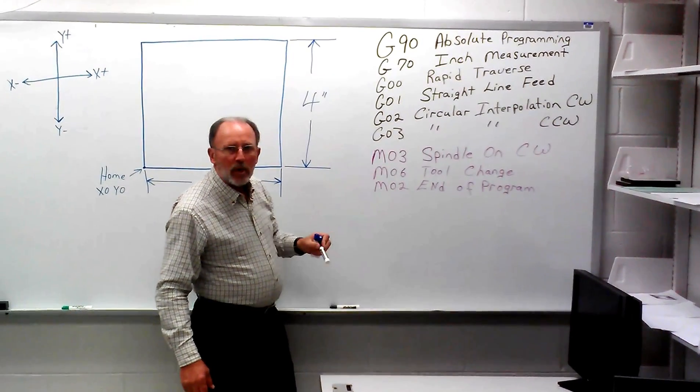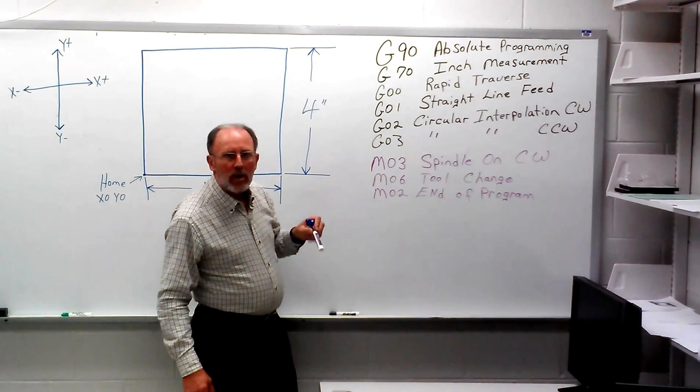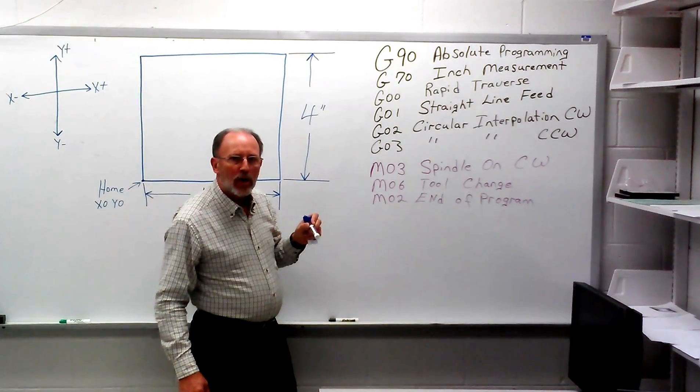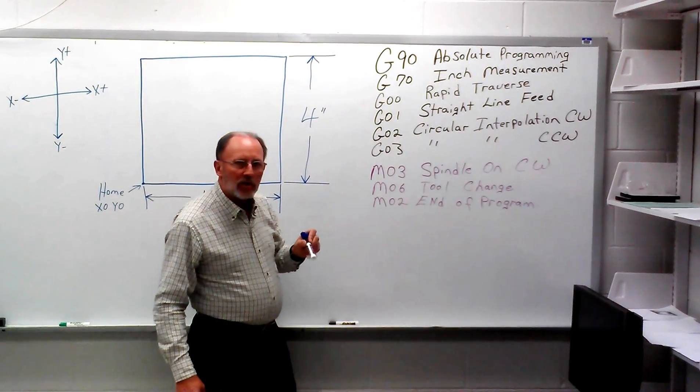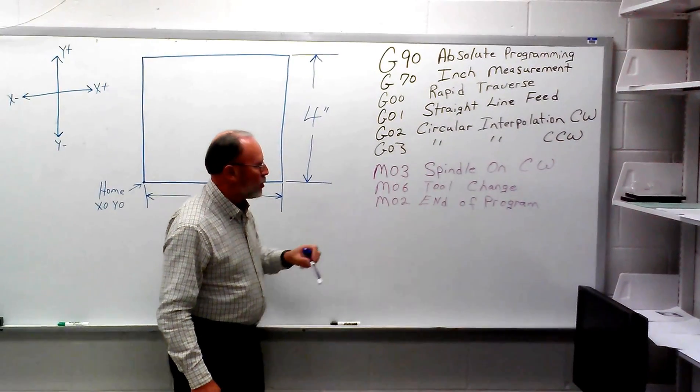A couple of M codes that we're going to be using is the M03 that turns our spindle on in a clockwise direction. The M06 is for a tool change, and M02 will end our program.